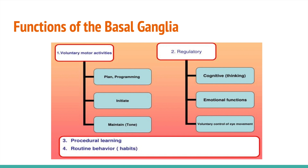Our last point on the functions of the basal ganglia covers procedural learning and routine behavior. Procedural memory is a type of implicit memory — that unconscious long-term memory — which aids the performance of particular types of tasks without conscious awareness of these previous experiences. It uses past experiences to remember things without having to think of them, and differs from declarative or explicit memory, which consists of facts and events that can be consciously recalled. For example, procedural memory allows you to remember how to ride a bike, even if you haven't done so in many years. Other examples include playing the piano, skiing, ice skating, playing baseball, swimming, driving a car, and even climbing stairs.